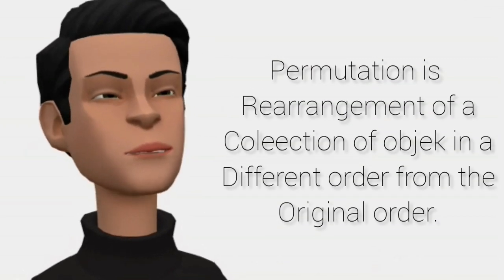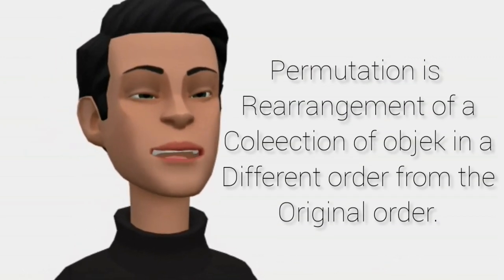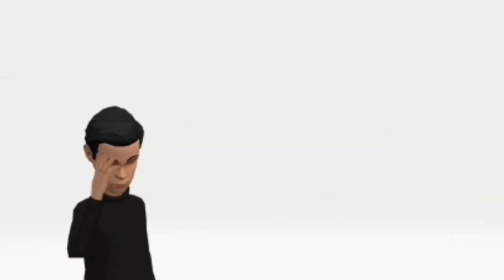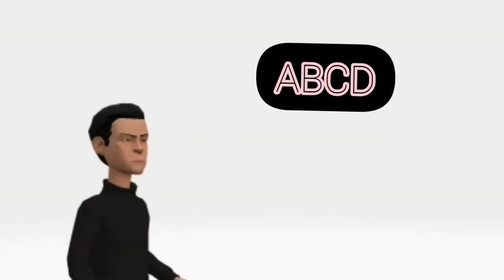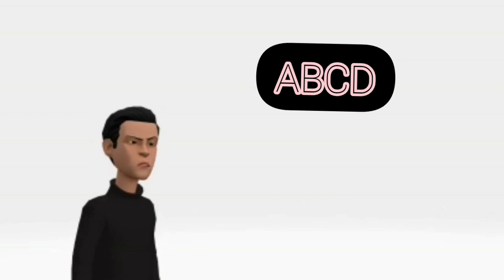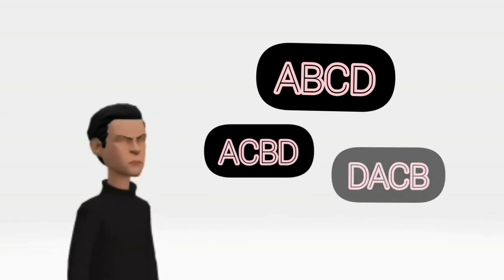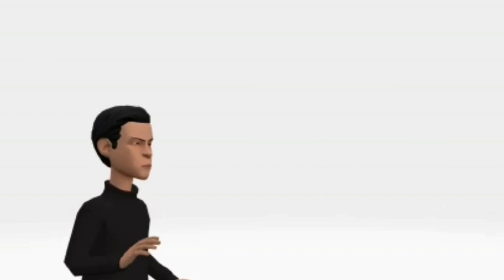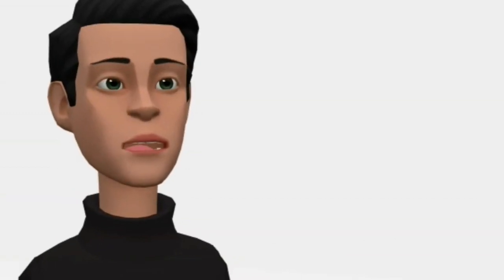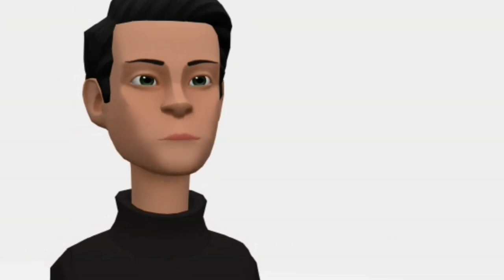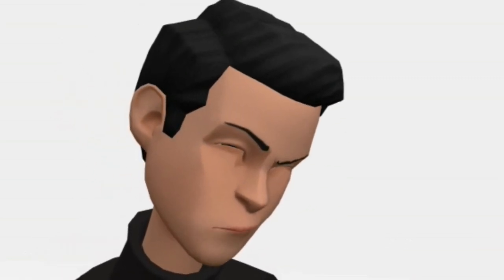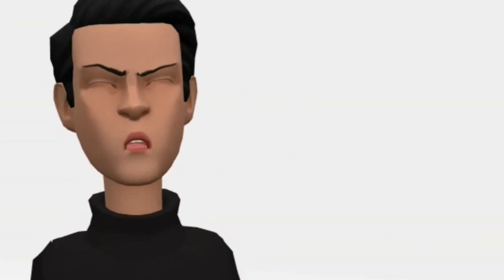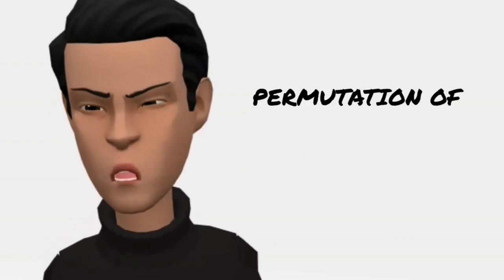Permutation is the arrangement of a collection of objects in a different order from the original order. For example, if there is an alphabet string A, B, C, D, then it can be rewritten in a different order: A, C, B, D or D, A, C, B, and so on. Each new arrangement contains the same elements as the original string A, B, C, D — just written in a different order. A new arrangement that has a different sequence from the original is called a permutation of A, B, C, D.